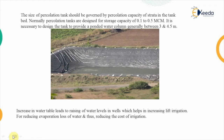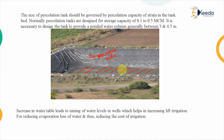This image represents an actual percolation tank. The sides are made impervious while the central portion has a permeable layer of soil. The size of the percolation tank should be governed by the percolation capacity of the strata — if the soil can percolate more water, the tank will be of larger size. Normally the capacity varies from 0.1 to 0.5 million cubic meters.